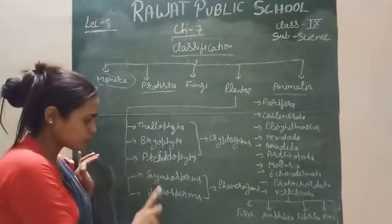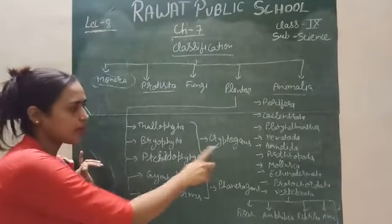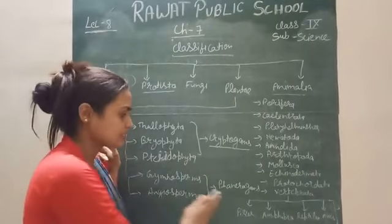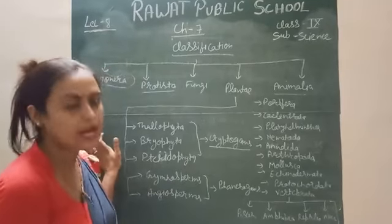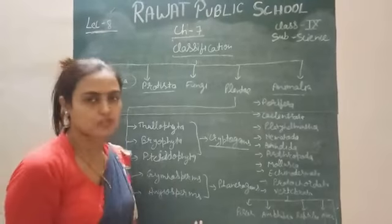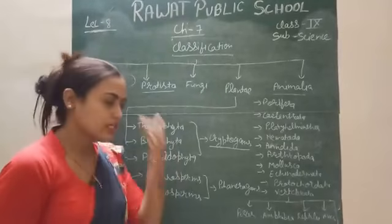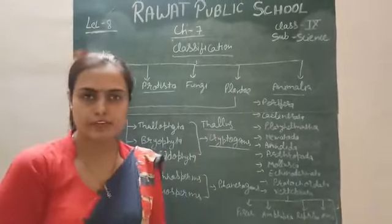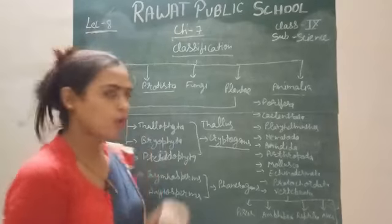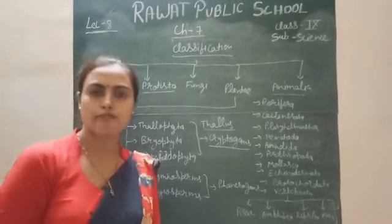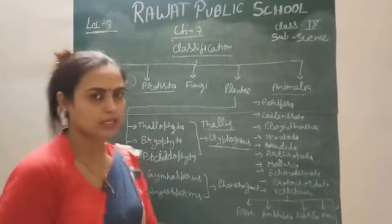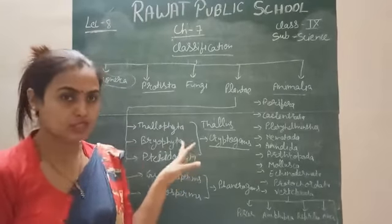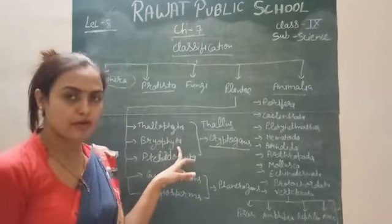The divisions are: Thallophyta, Bryophyta, Pteridophyta, Gymnosperm, and Angiosperm. Out of these, Thallophyta, Bryophyta, and Pteridophyta are cryptogames — meaning they do not have seeds and flowers. Gymnosperm and Angiosperm are phanerogames, meaning seeds, flowers, and fruits are present. Thallophyta means algae; their body structure is thallus type, meaning there is no differentiation of root, stem, and leaf. They do not have any vascular bundle — xylem and phloem are completely absent in Thallophyta. Xylem and phloem are present in Bryophyta but not well developed.